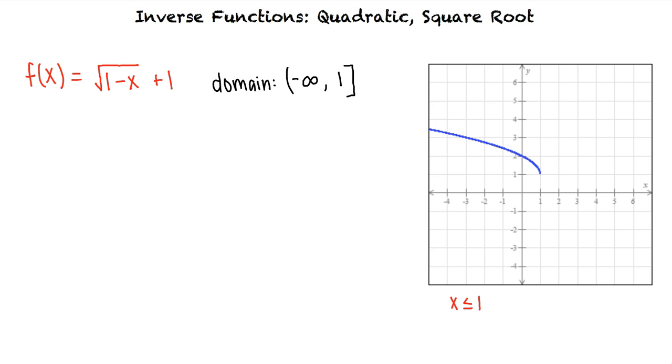To find the range, we need to consider the minimum value of the function. For the standard square root function, y equals square root of x, the minimum value is 0.